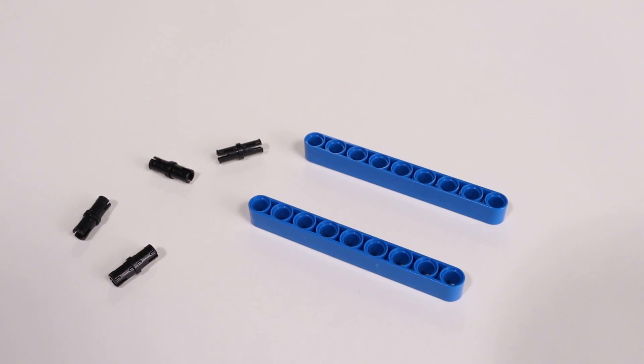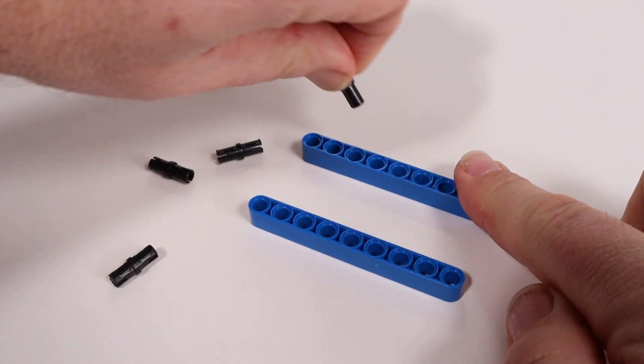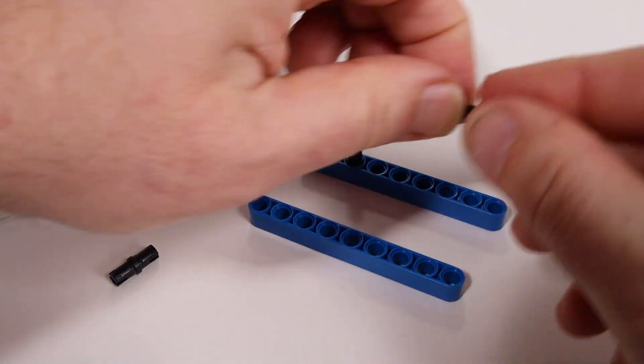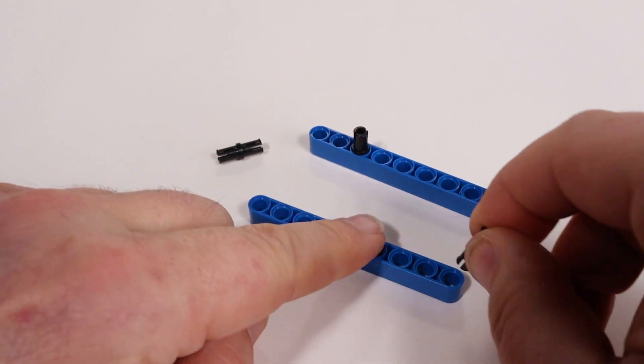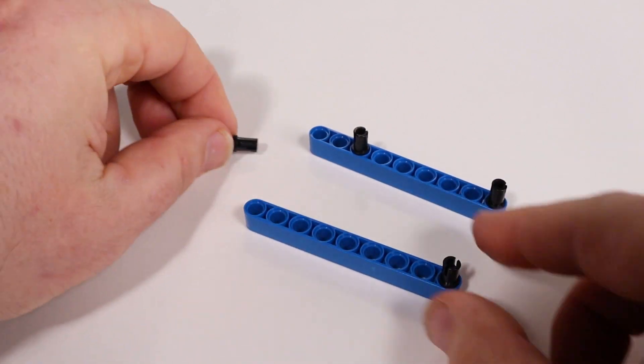Locate two nine-hole long beams and four of the short black pins. Insert a pin three holes in from the end and all the way on the opposite end. Do this for both beams.